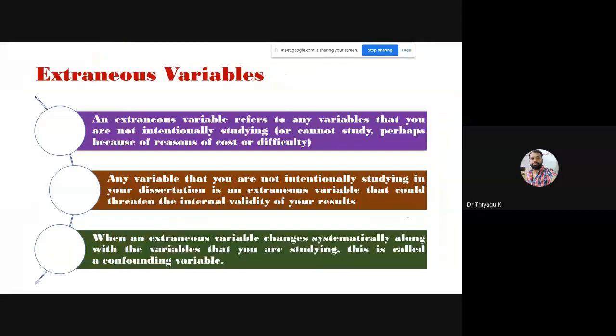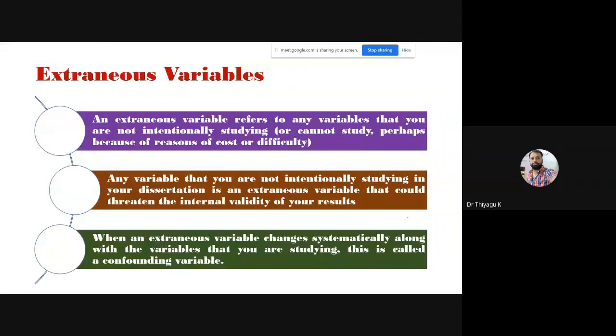The third type is called the extraneous variable. Due to time constraints I am skipping this, because the extraneous variable is essentially a confounding variable.